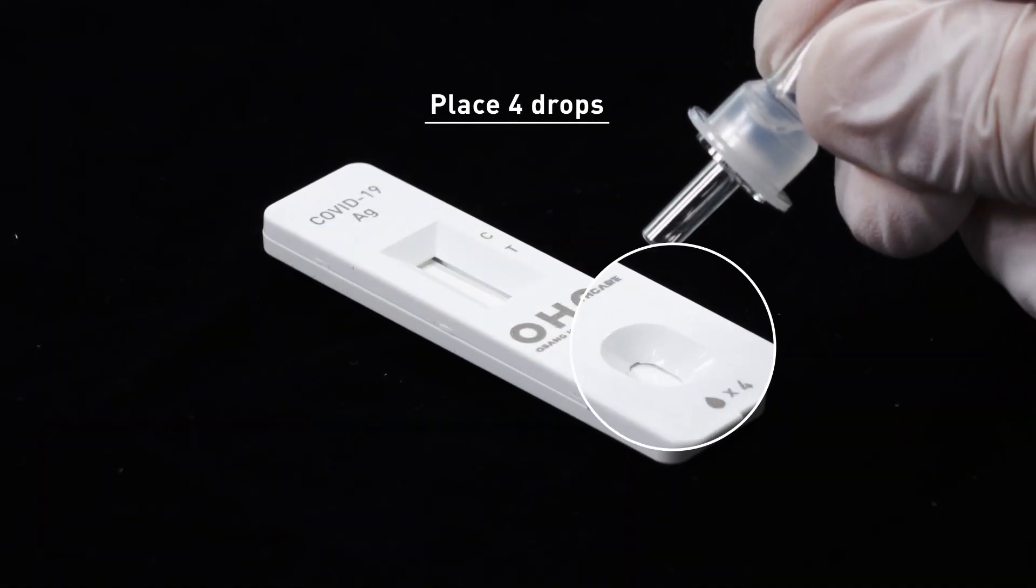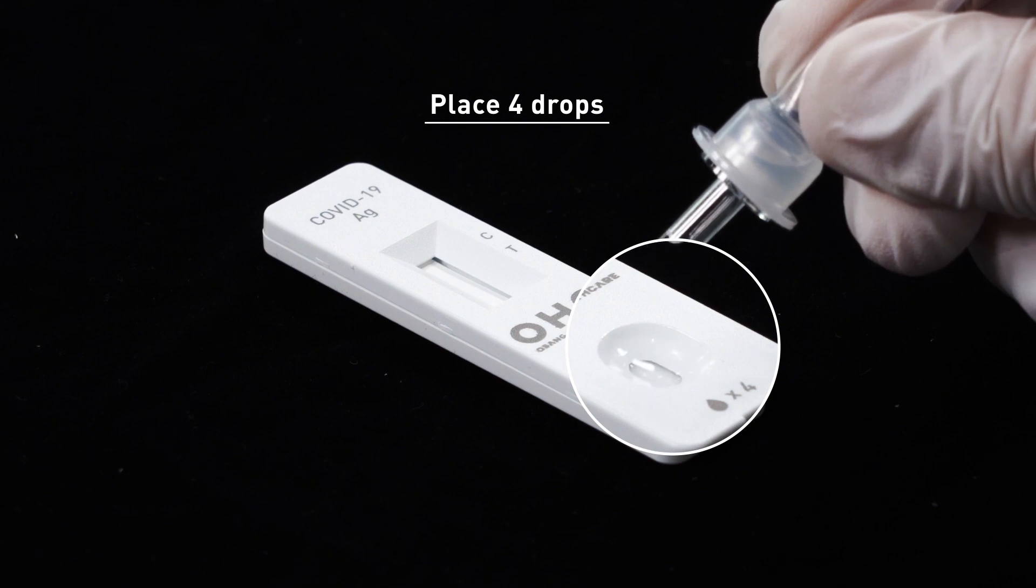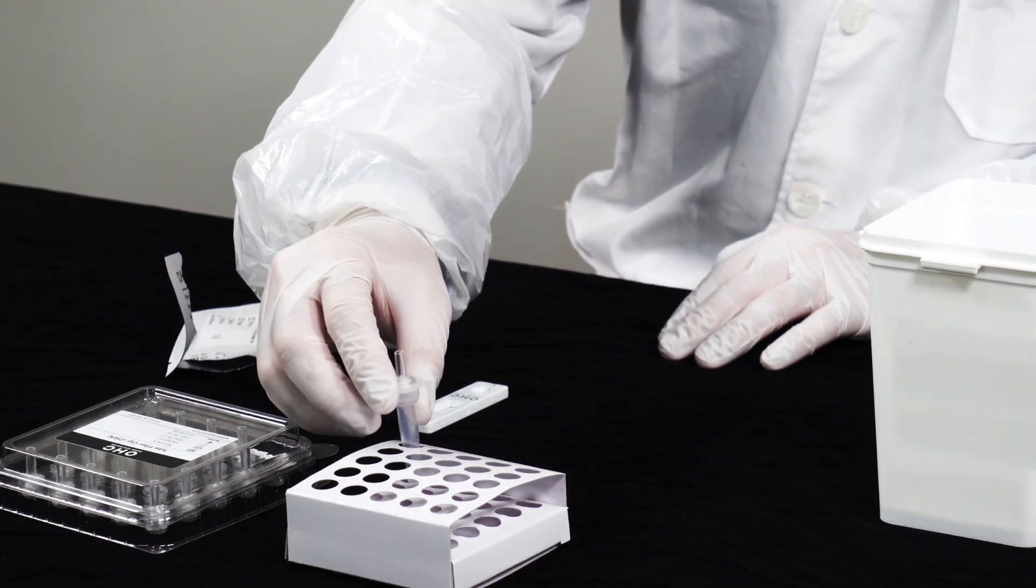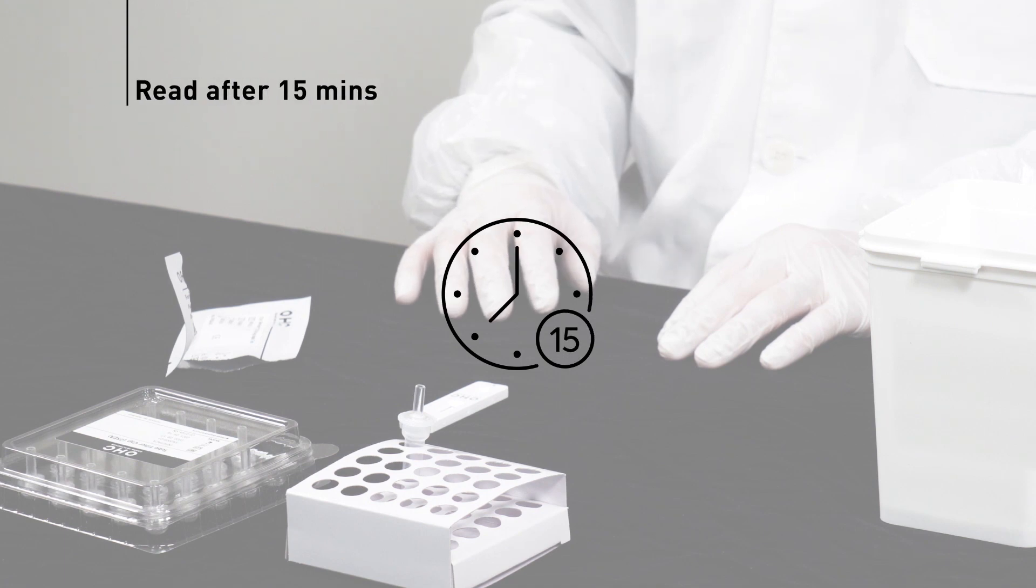Apply 4 drops from the extraction buffer tube onto the sample inlet of the cassette. Read the results after 15 minutes from the start of the test.